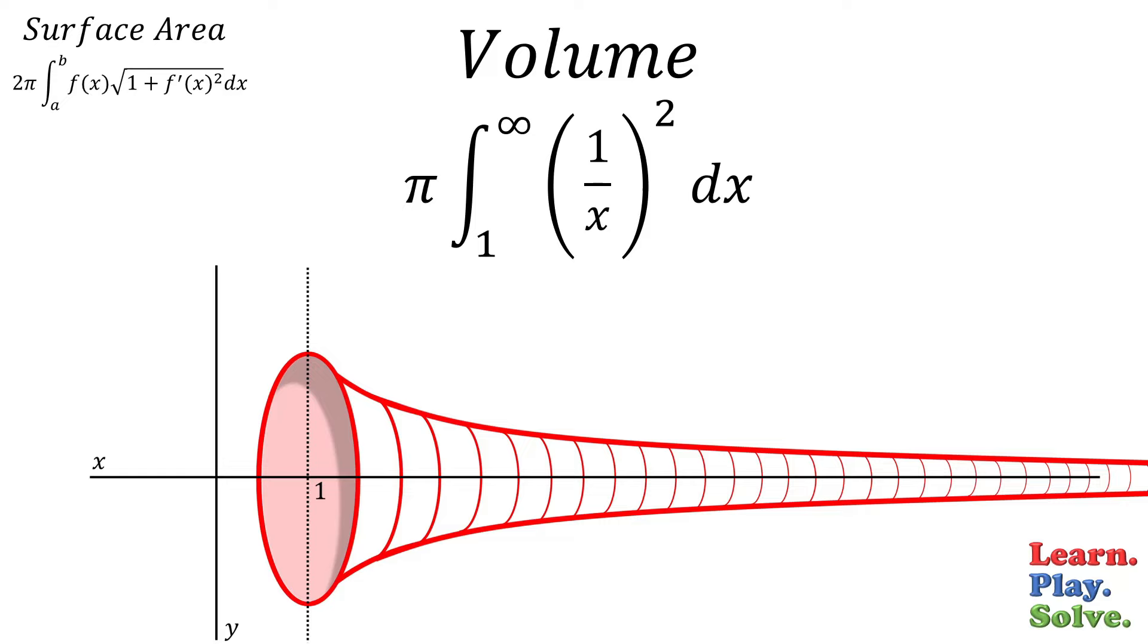We can square the 1 over x, then write it as x to the negative 2. Now, if we integrate using the power rule, we get negative x to the negative 1, which we can then rewrite as negative 1 over x. When we plug in the limits and subtract, we get this. 1 over infinity is 0, so we end up with pi.